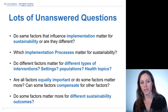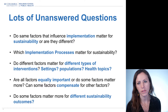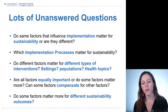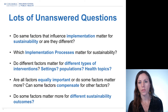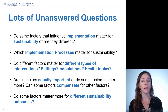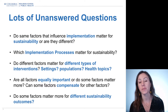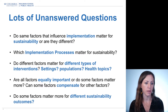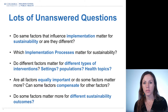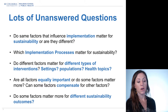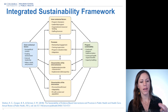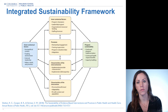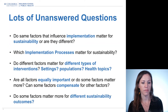There are lots of unanswered questions. For example, do the same factors that influence implementation — as seen in frameworks like the Consolidated Framework for Implementation Research — also matter for sustainability, or are they different? Is there some overlap, or are there things we need to focus on specifically for sustainability? Many in the sustainability field think there are factors specific to sustainability that matter. Which implementation processes or strategies matter for sustainability? We know very little about that. Do different factors matter for different types of interventions, different settings, different populations, or health topics? Are all factors equally important — do all need to be in place, or are there certain critical ones? And are there some that, if absent, can be compensated for by others — for example, if there's no funding, can partnerships help compensate?